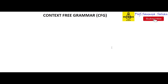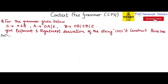In this video, we will be understanding how to find leftmost and rightmost derivation for a given string using sentential form. Given a question for the grammar below with the following production rules, I have to find out the leftmost and rightmost derivation for the string 1,0,0,1 and also construct the parse tree.